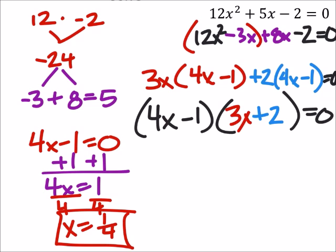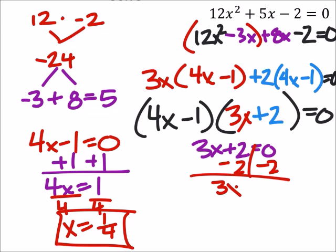And then on the other hand, we've got this 3x plus 2, we need it to equal 0. So I'll subtract 2 from both sides, and I've got 3x equals negative 2, and divide both sides by 3, and x is negative 2 thirds.